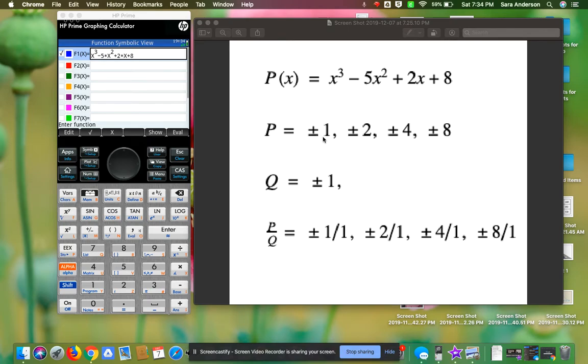For p, the factors of 8 are ±1, ±2, ±4, and ±8. The factors for q are just ±1.